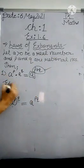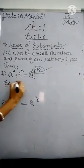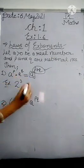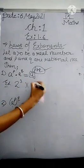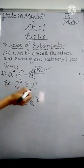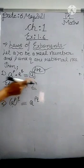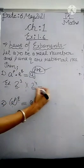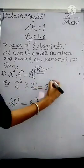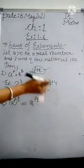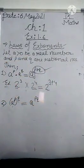Let us see with an example. If I have 2 power 3 multiplied by 2 power 4, here you can see that base is same, 2 and 2, but powers are different. So its result will be 2 power 3 plus 4. Here we will add the powers. So this is the first law of exponent.